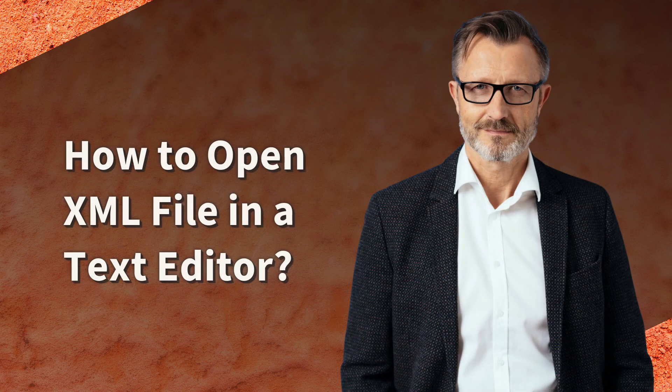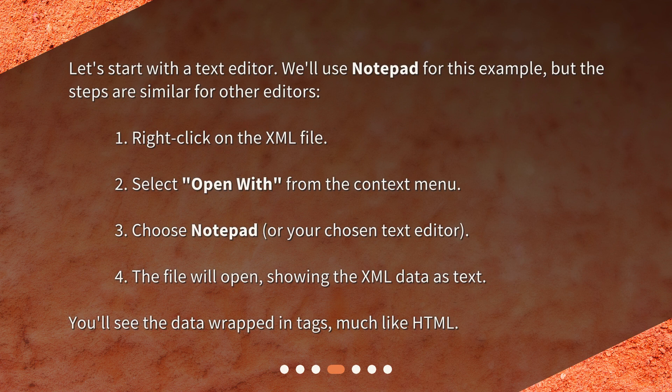How to open an XML file in a text editor? Let's start with a text editor. We'll use Notepad for this example, but the steps are similar for other editors. 1. Right-click on the XML file. 2. Select 'Open With' from the context menu. 3. Choose Notepad, or your chosen text editor. 4. The file will open, showing the XML data as text. You'll see the data wrapped in tags, much like HTML.